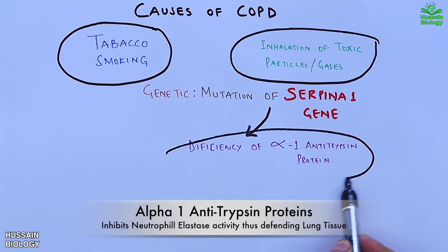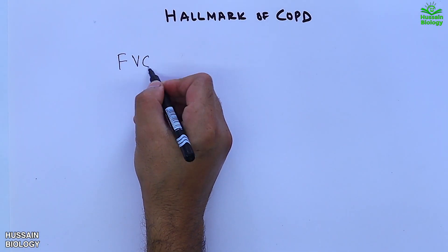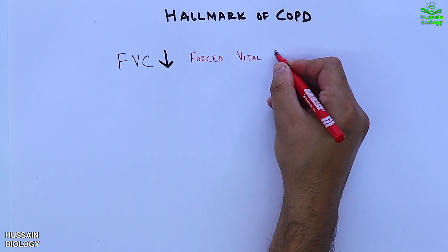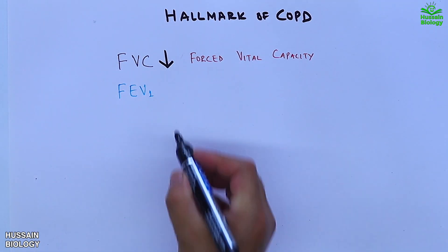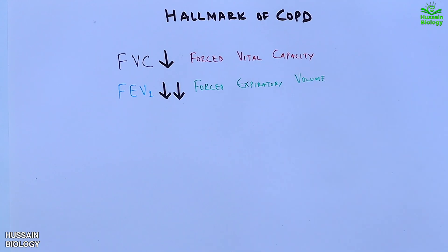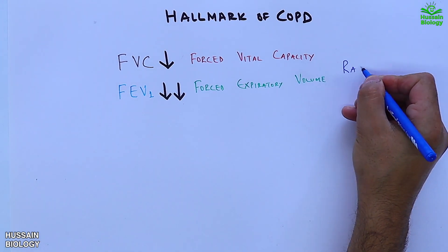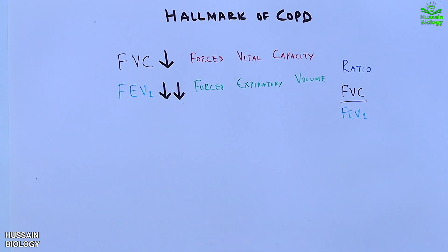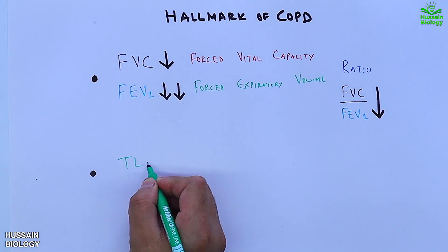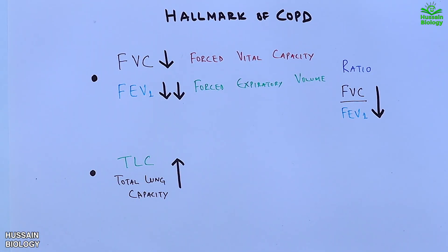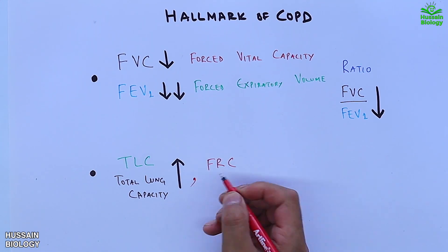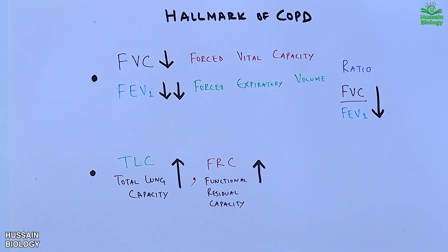The hallmark of COPD involves changes in lung function measurements. FVC (forced vital capacity) decreases and FEV1 (forced expiratory volume in 1 second) decreases considerably, so the FEV1 to FVC ratio is reduced. When alveoli are destroyed, air is trapped in the lungs, causing TLC (total lung capacity), functional residual capacity, and residual volume to all increase.